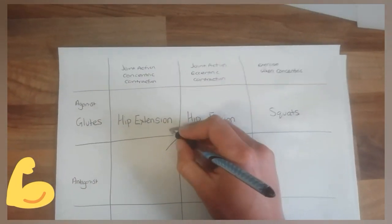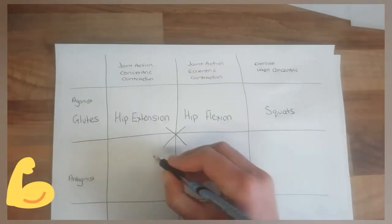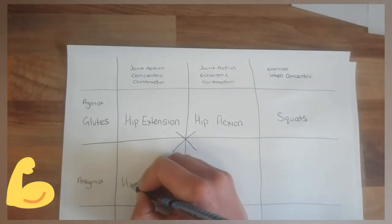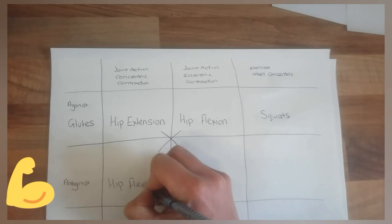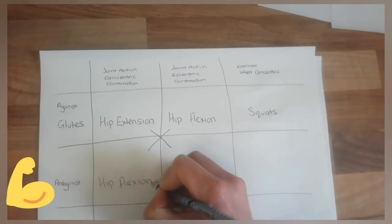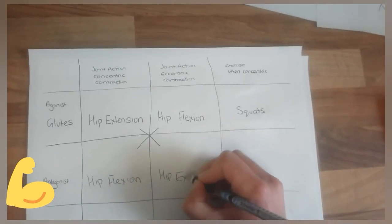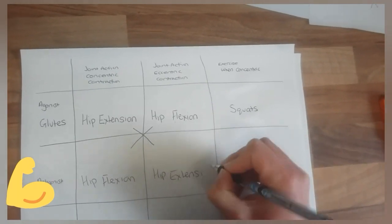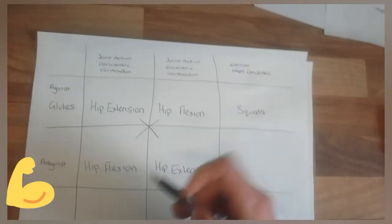What happens is you just draw a cross in this middle here. And then the hip flexion goes down here. And the hip extension goes on this side because they are working opposite each other.